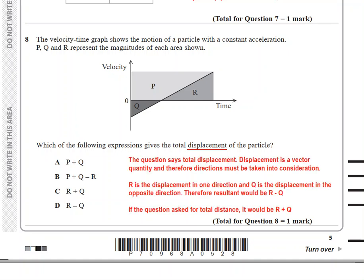The question says total displacement, and displacement is a vector quantity, and therefore direction must be taken into consideration. R is the displacement in one direction and Q is the displacement in the opposite direction. Therefore, the resultant displacement, or in other words the total displacement, would be R minus Q. Why are we subtracting Q from R? Because R is greater.